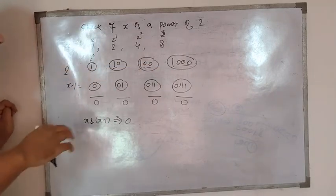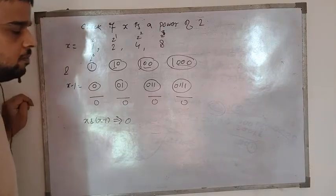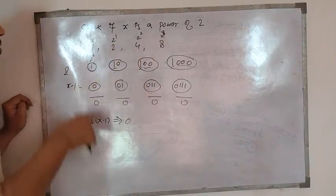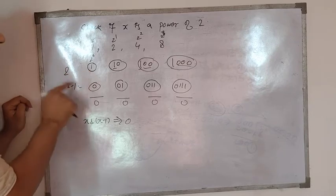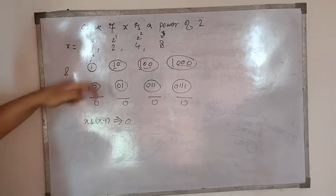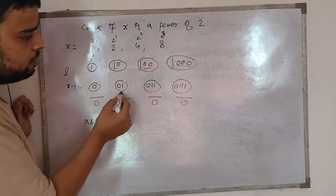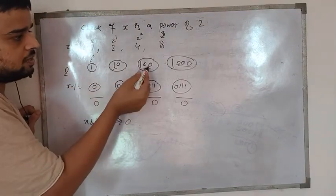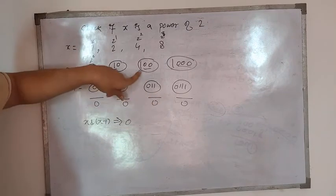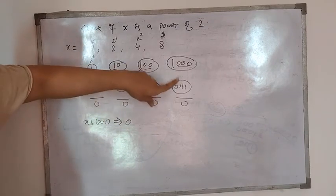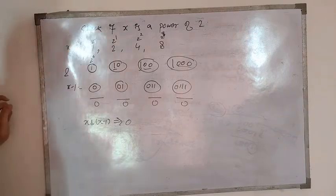Now if I subtract 1 from these numbers: if I subtract 1 from 1 it will be 0. If I subtract 1 from 1,0 it will be 0,1 because this is 2 and 2 minus 1 is 1. If I subtract 1 from 1,0,0 it will be 0,1,1 because this is 4 and this is 3. This is 8 and this is 7.